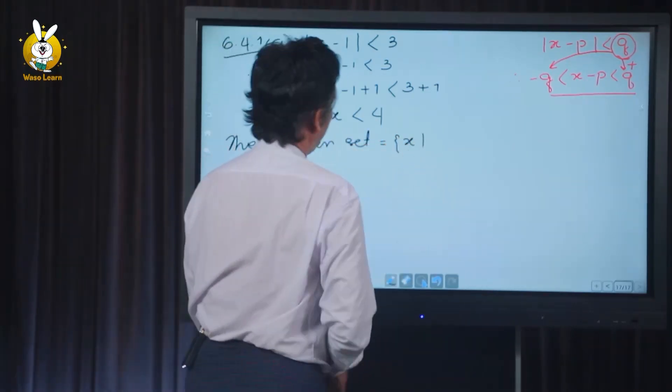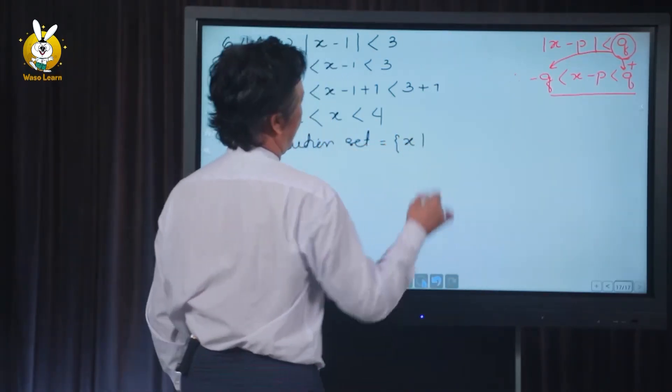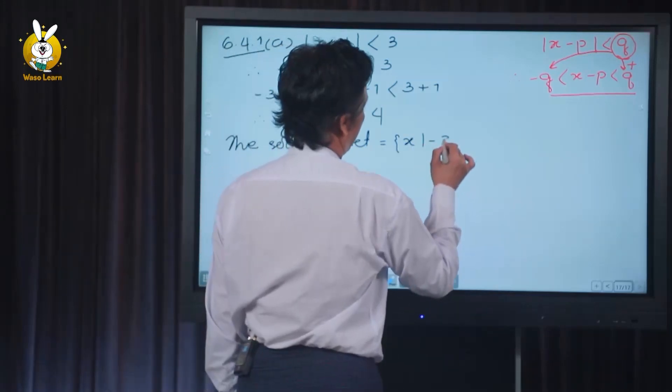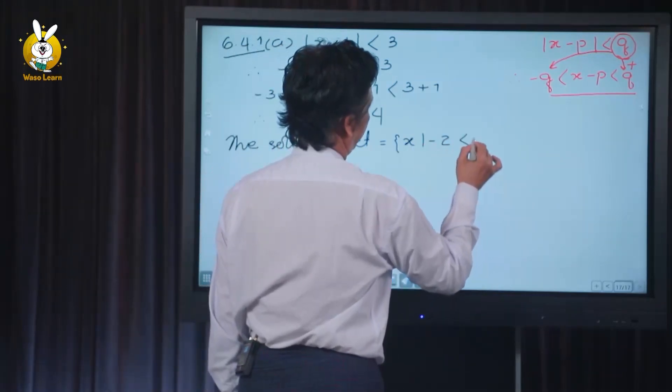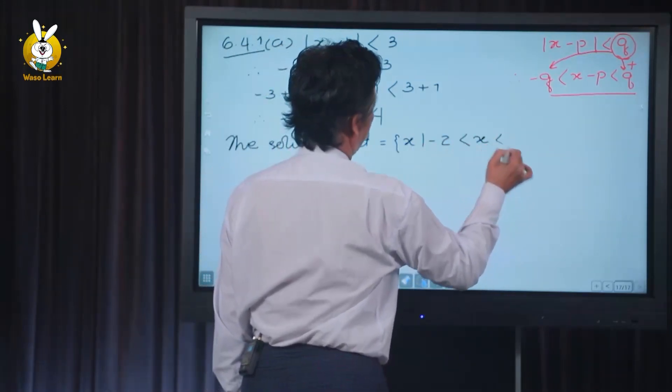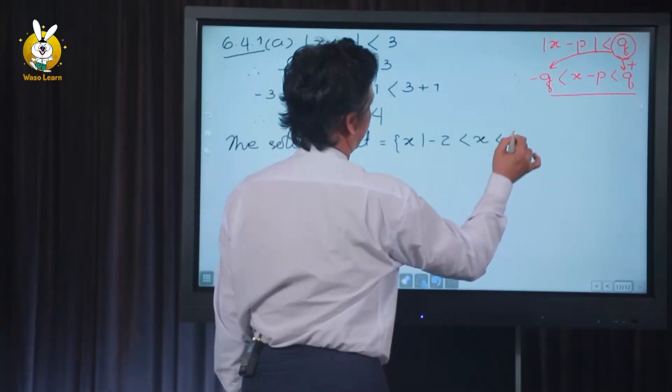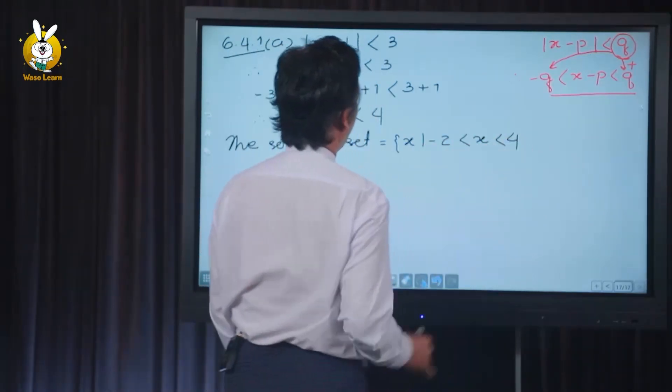The zero is up there. Minus 2 is less than 4 on the number line.